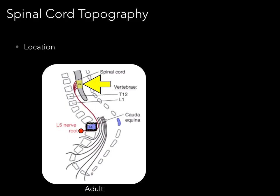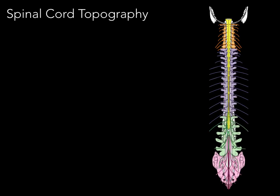As a result, the lumbar and sacral nerve roots all form below the conus medullaris, and this is known as the cauda equina, or tail of the horse, because it looks like a horse's tail. This is why the spinal cord ends at approximately the L1-L2 vertebral level in the adult, and the cauda equina — along with cerebrospinal fluid — fills the space below the conus medullaris.